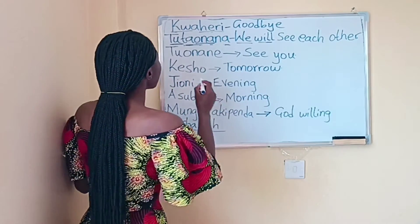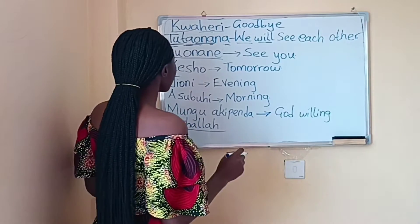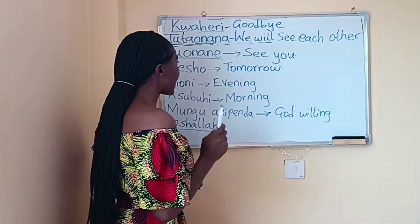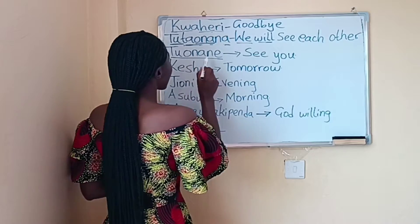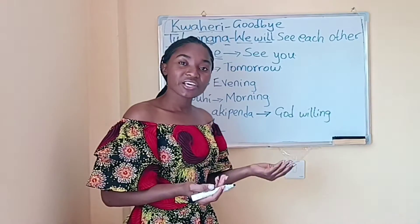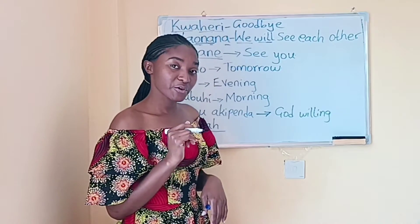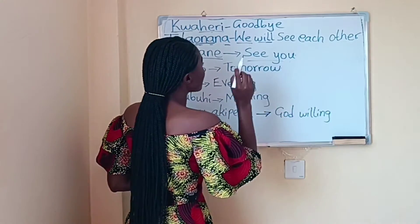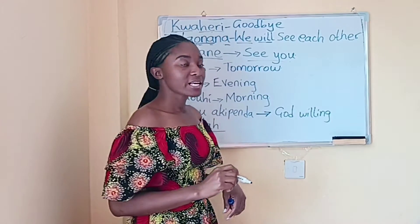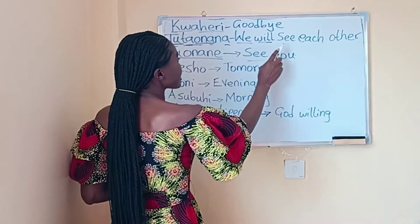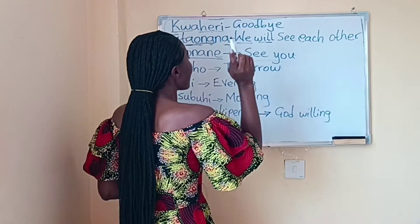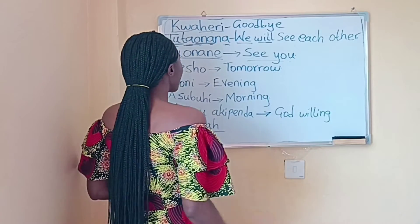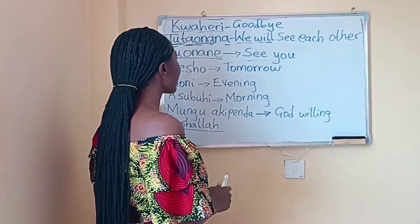Now let's look at another one: tuonane. This is slightly different from tutaonana. Tuonane means 'see you' — goodbye, see you. So tutaonana means 'we will see each other,' while tuonane means simply 'see you.'